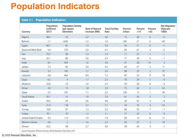Please pause the video and study the population indicators in the chart. Note the population density of Bahrain compared to Western Sahara, the total fertility rate of Sudan compared to Lebanon, Qatar and Bahrain being 100% urban while Yemen is only 29%, most of the region being young with a low percentage over 65, and the extreme difference in net migration rate between Bahrain and Qatar.